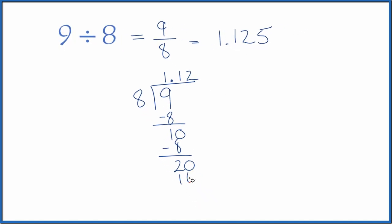2 times 8 is 16. Subtract, we get 4, call it 40 and move over 1. And 5 times 8 is 40 with no remainder.